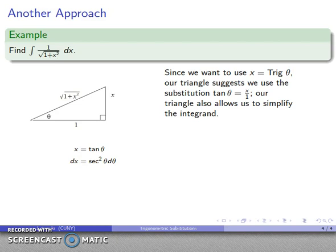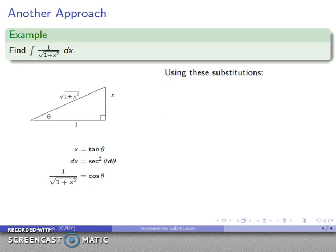The other thing that's helpful about drawing the triangle first is that we can use it to simplify the integrand. So let's consider this expression 1 over square root 1 plus x squared. Well that's actually going to be cosine of theta because that is adjacent over hypotenuse.